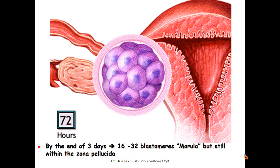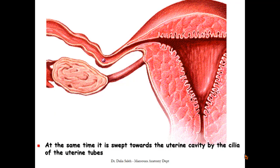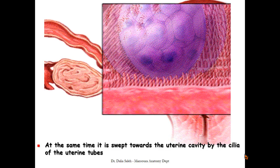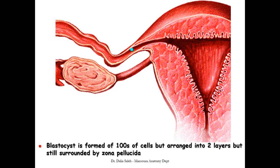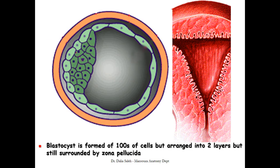All of this division occurs within the zona pellucida, which remains intact around the newly formed blastomeres. At the same time, the morula is swept towards the uterine cavity by the cilia of the uterine tube. The morula is a ball of about 32 blastomeres inside the zona pellucida. The cilia of the uterine tube move in one direction to move the morula towards the uterine cavity.